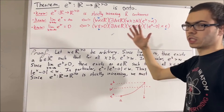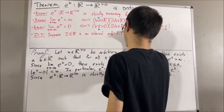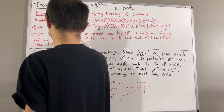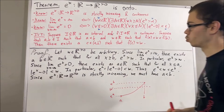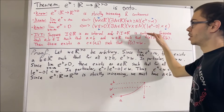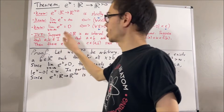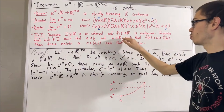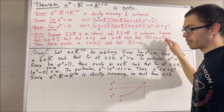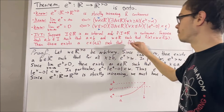Let's recall what the intermediate value theorem tells us. Here is one version: suppose I is an interval and f is a continuous function on I. Suppose a and b are elements of I such that a < b, and suppose w is a real number such that f(a) < w < f(b). Then there exists a real number c in the open interval (a, b) such that f(c) = w.